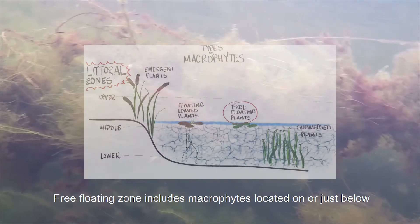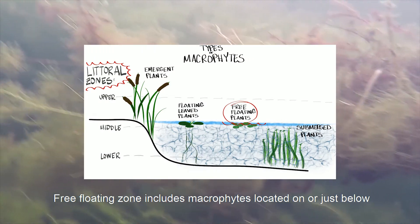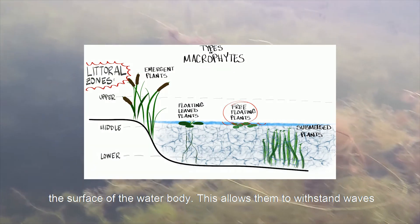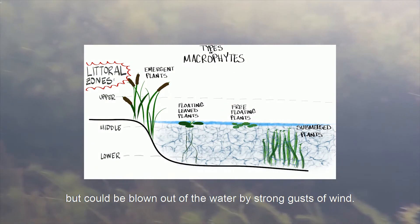The free floating zone includes macrophytes located on or just below the surface of the water body. This allows them to withstand waves but they could be blown up by the water by strong gusts of wind.